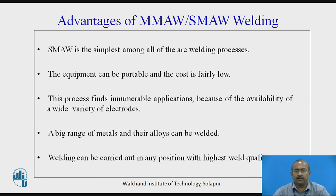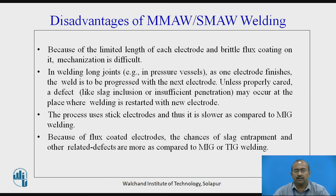Some advantages of manual metal arc welding: it is the simplest among all arc welding processes. Equipment can be portable and the cost is fairly low. A big range of metals and their alloys can be welded, and welding can be carried out in any position with high weld quality. Some disadvantages: because of the limited length of each electrode and brittle flux coating, mechanization is difficult. The process uses stick electrodes and is thus slower compared to MIG welding. The chances of slag entrapment and related defects are more compared to TIG or MIG welding.